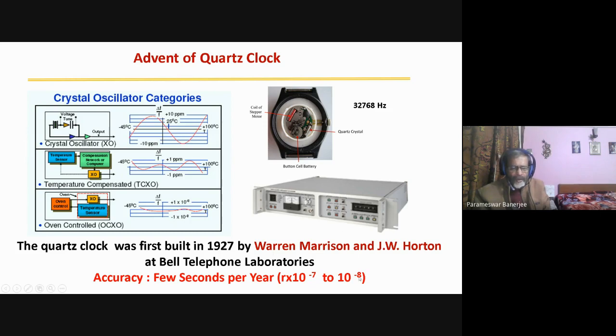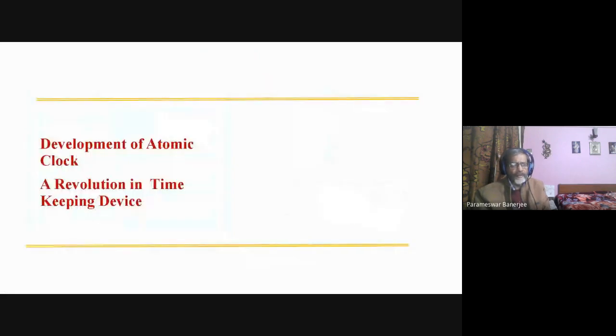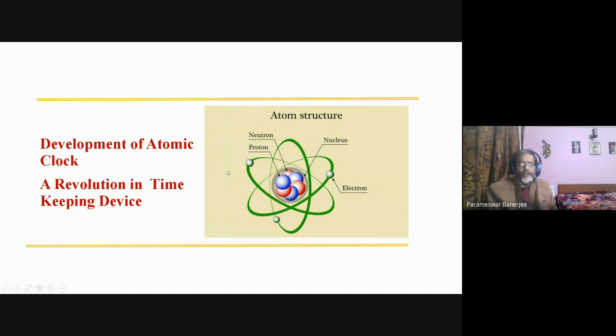Now, once you have achieved 10 to the power minus 10, then also you are not very satisfied. They would like to go for a better clock. Now, so, they have gone to the atomic clock. This is a revolution in timekeeping device. How? Now, you know the structure of the atom. All of you are basically engineering degree and basic physics degree. So, you know the structure of the atom consists of neutron and proton as a nucleus and it has electron orbiting around that. This is the basic structure and this very basic feature is used in atomic clock. How?